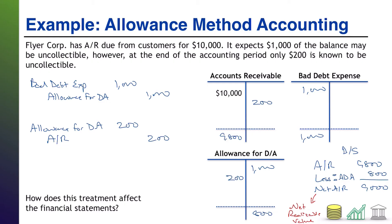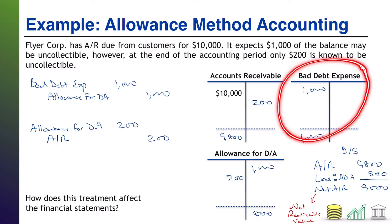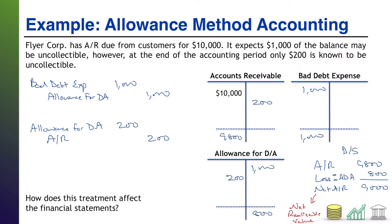This is extremely accurate and informative to investors, telling them exactly what you were owed, what you estimate you won't collect, and what you expect to ultimately receive. But the only way to achieve that balance sheet accuracy is to be a bit conservative on the income statement and record the total expected cost rather than the actual cost. You're sacrificing income statement accuracy for balance sheet accuracy — and that's just how the allowance method works, viewed as a positive trade-off by standard setters.